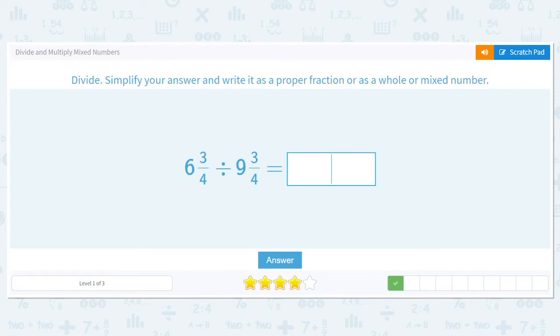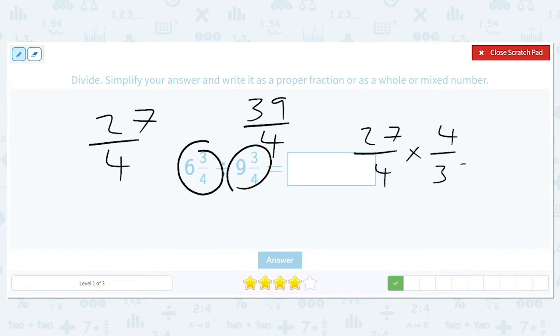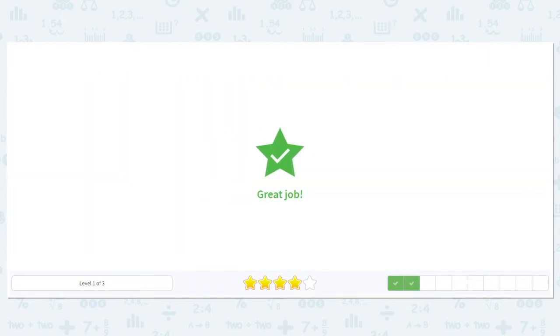How about this? 6 and 3 fourths divided by 9 and 3 fourths. So what's our first step? Our first step is to write this as 27 fourths. And our next step, that's 6 times 4 plus 3. And our next step is to write this as 9 times 4, 36 plus 3 is 39 fourths. And we're dividing, so we end up doing 27 over 4 times 4 over 39, which cancels these out. So we end up dividing both things by 3, and that's 9 divided by 3, that's 13. So we should end up with 9 divided by 13. Great job.